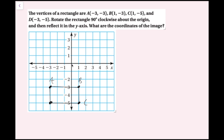Starting with point A: from the origin I go down 3 and left 3. After 90° clockwise, down becomes left and left becomes up, so I go left 3 and up 3 — that's A′. For point B: from the origin I go right 1 and down 3. Right becomes down and down becomes left, so I go down 1 and left 3 — that's B′.